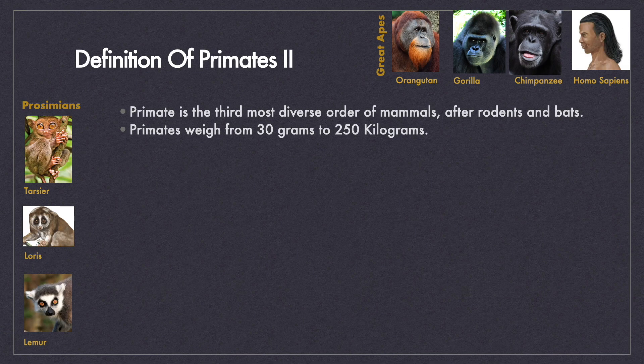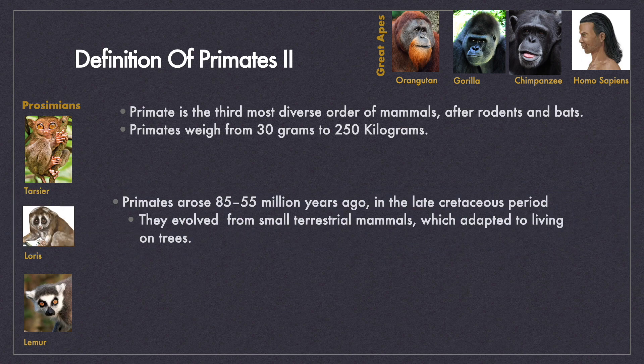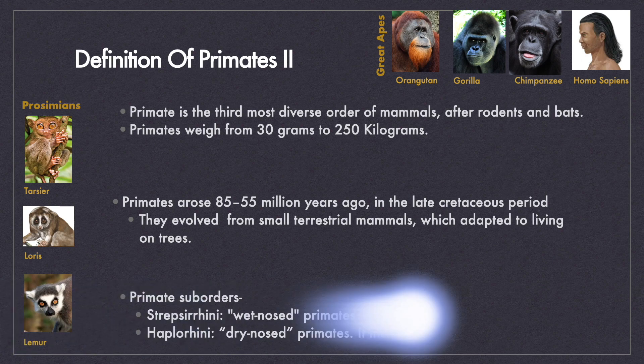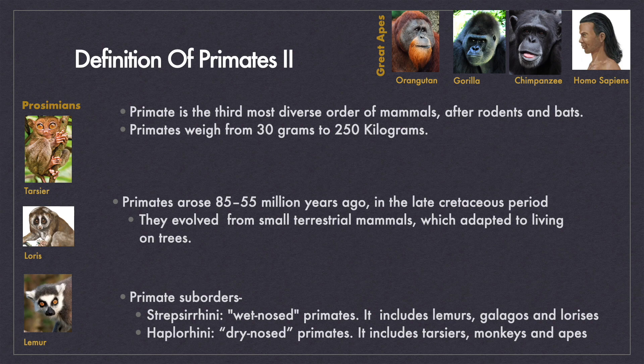Primate is the third most diverse order of mammals after rodents and bats. Primates vary a lot in their size and weight. The lightest primates have a body weight of 30 grams and the heaviest weigh up to 250 kilograms. Primates arose 85 to 55 million years ago in the late Cretaceous period. They evolved from small terrestrial mammals which adapted to living in trees.